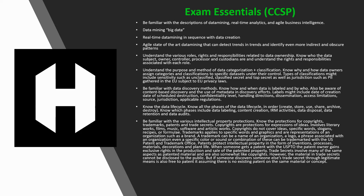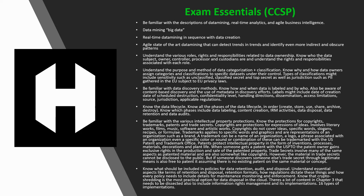Patents protect intellectual property in the form of inventions, processes, materials, decorations, and plant life. When somebody gets a patent with the USPTO, the owner gains exclusive rights in the production and sale of that property. Trade secrets involve many of these same aspects, but a trade secret is just that — it cannot be disclosed to the public.